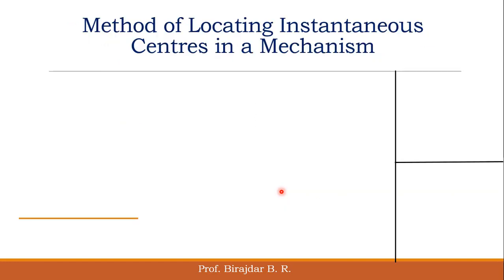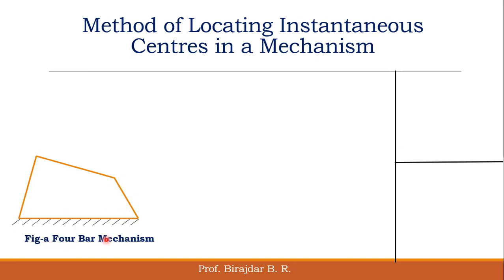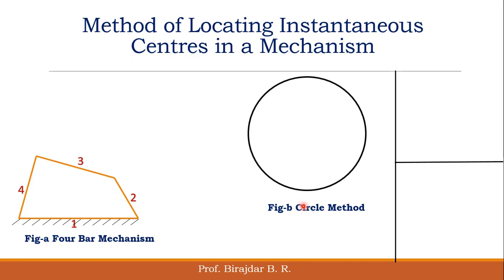Now we will see how to locate all 6 instantaneous centers. This is the 4-bar mechanism with link 1, link 2, link 3, link 4. We use the circle method to locate all 6 instantaneous centers. Since there are 4 links, we mark 4 different points on a circle: 1, 2, 3, and 4. When we join link 1 and link 2 with a pin joint, at that point the instantaneous center 1-2 will lie.